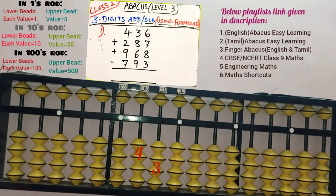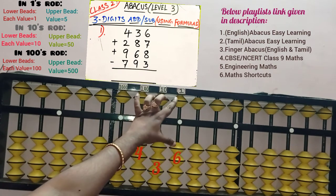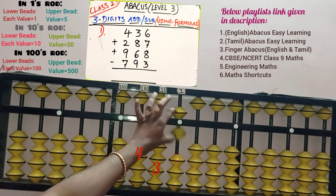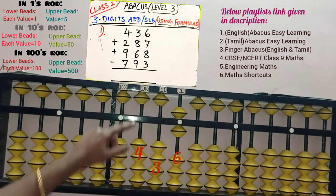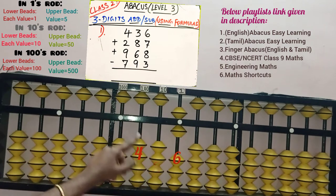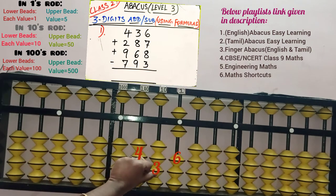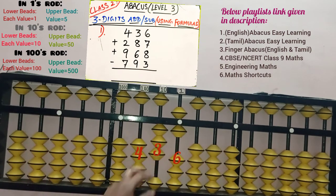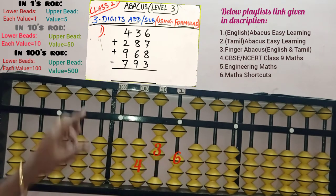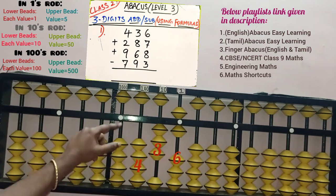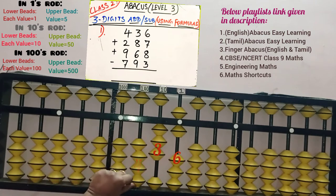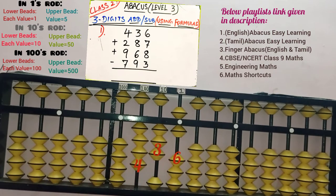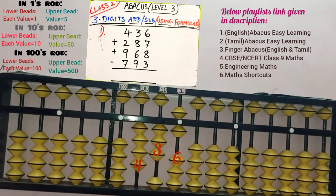436: add 6 bits in the 1s slot, then move 3 bits in the 10s slot — so 30 is added — and move 4 bits in the 100s slot, which means 400 is added. 436 is added.